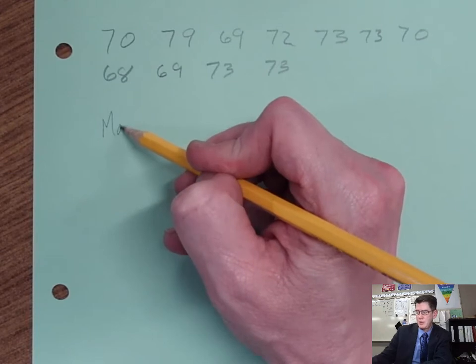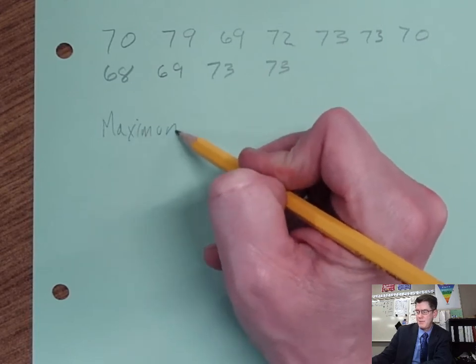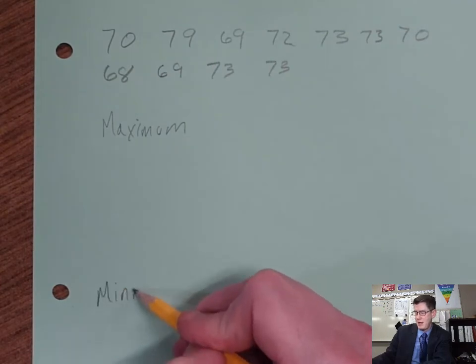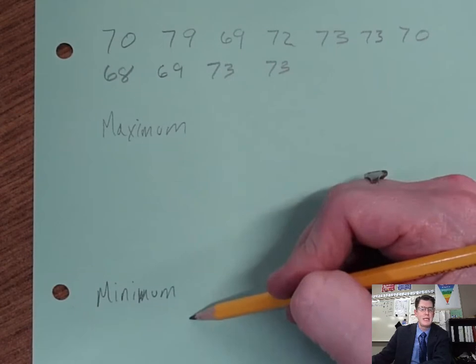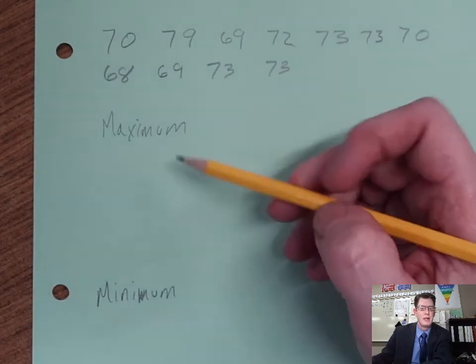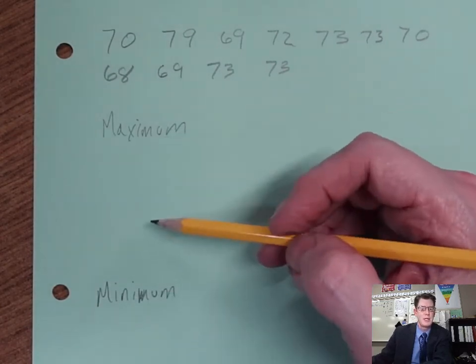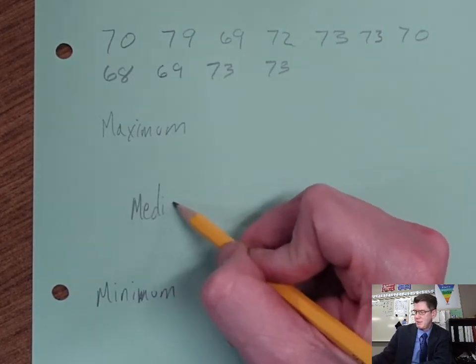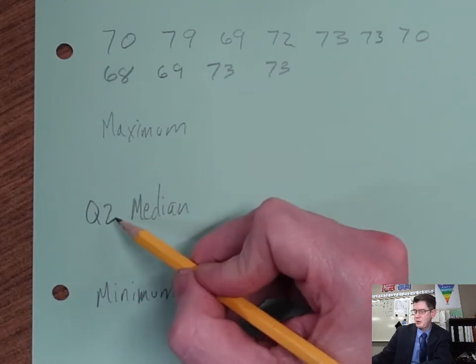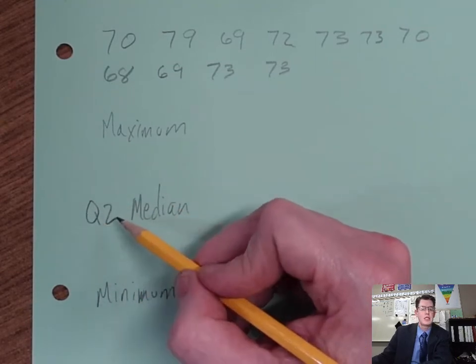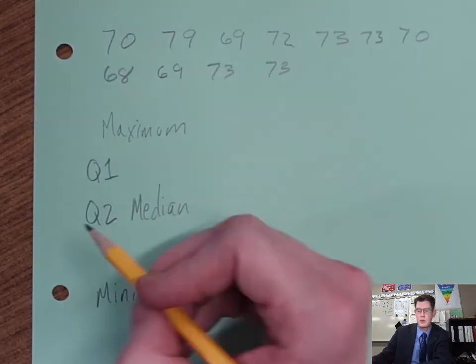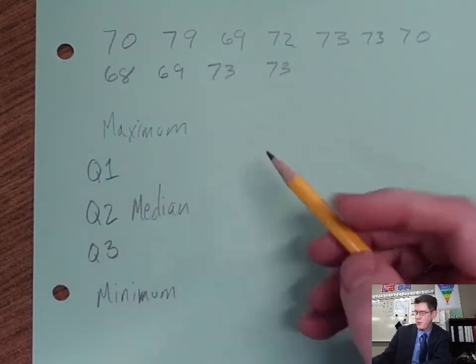Today what we're going to be looking at is what's the maximum value and what's the minimum value. Yes, those are going to be as easy to find as you think they are - it's just the biggest number and the smallest number. And then there's the median, which we talked about before. The median is called the Q2 or the second quartile, because there's a first quartile. Think of school quarters: one quarter, two quarter, three.